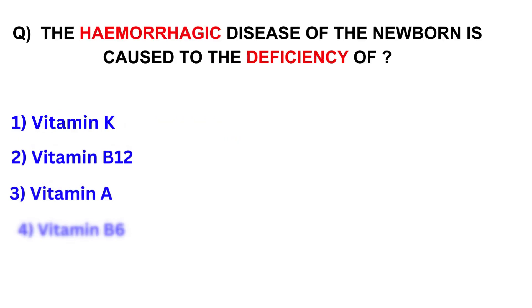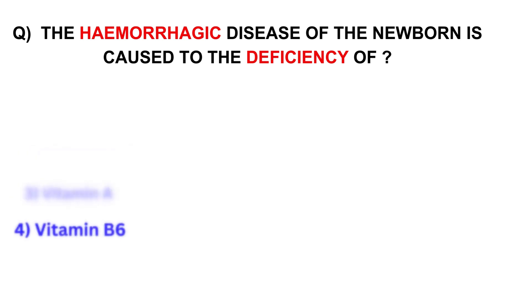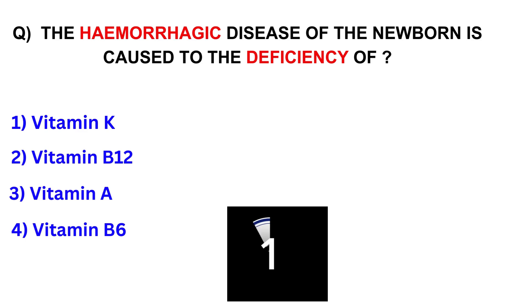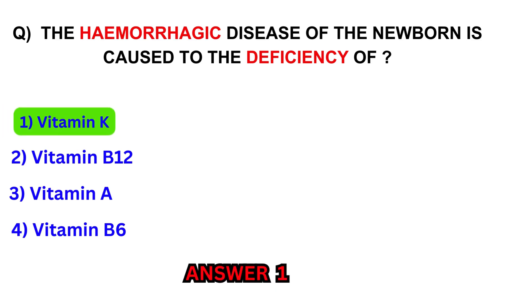The hemorrhagic disease of the newborn is caused by the deficiency of? Vitamin K, Vitamin B12, Vitamin A, or Vitamin B6. Answer: Vitamin K.